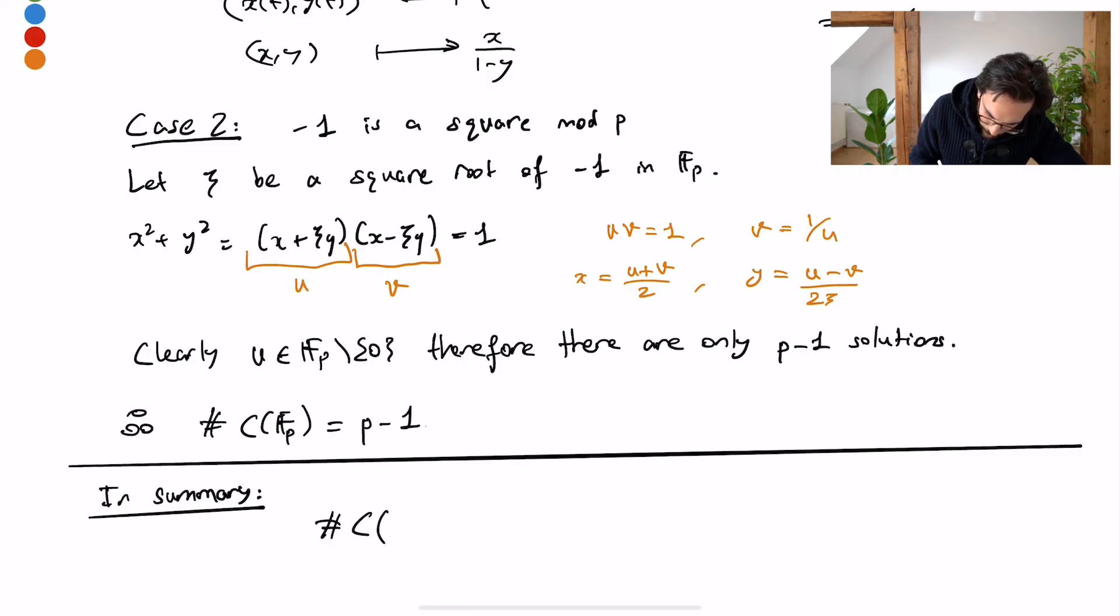The number of points in C of F_p is either going to be, well, two or four however you count it for p equals two, and then p plus one for minus one not a square residue mod p, and p minus one otherwise. So minus one not a square residue, and now minus one a square residue you get p minus one points.